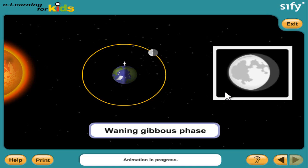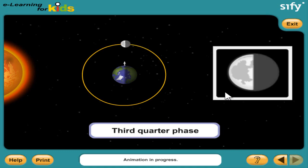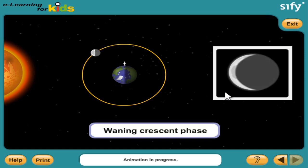In the waning gibbous phase, the other half of the moon is lit by the sun, and we see it looking like a little less than a whole circle. The waning gibbous moon looks like it is shrinking, but it's not. In the third quarter phase, the left half of the moon appears lit, and the right side of the moon appears dark. During the waning crescent phase, the moon looks like a crescent. This moon signals the beginning of a new cycle, and means that you will see the new moon in a few days.